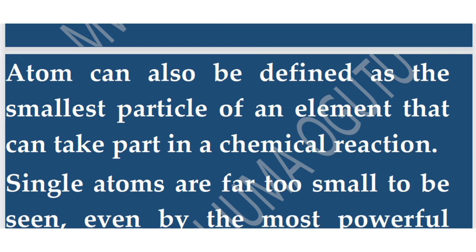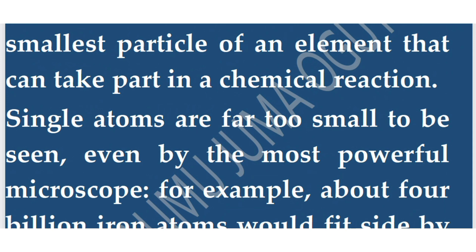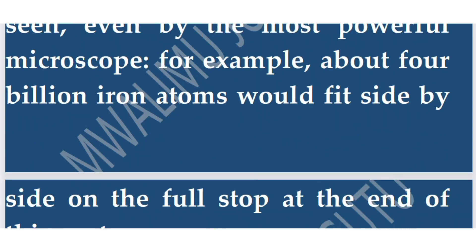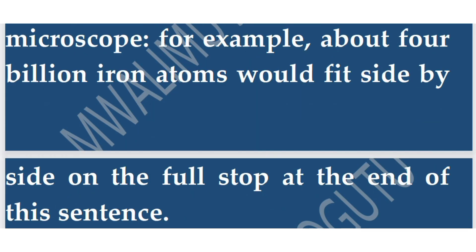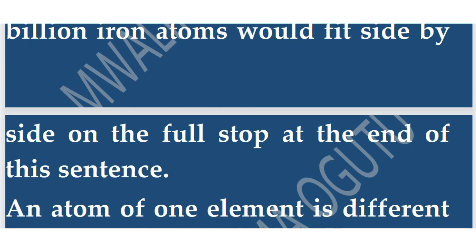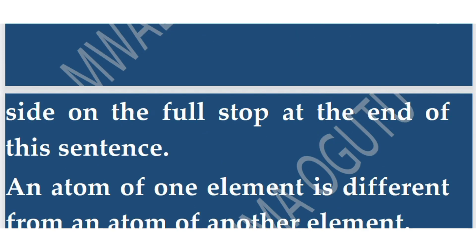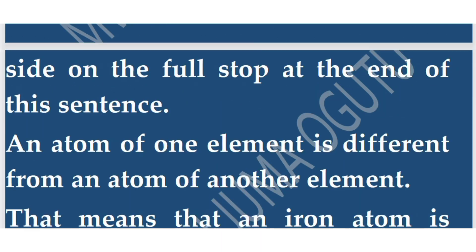Single atoms are far too small to be seen even by the most powerful microscope. For example, about 4 billion iron atoms would fit side by side on the full stop at the end of a sentence. An atom of one element is different from an atom of another element, so atoms are unique, and each element has atoms of its own kind.